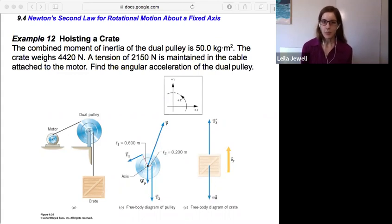The example says the combined moment of inertia of the dual pulley is 50.0 kilograms per meter squared. The crate weighs 4,420 newtons. A tension of 2,150 newtons is maintained in the cable attached to the motor. Find the angular acceleration of the dual pulley.